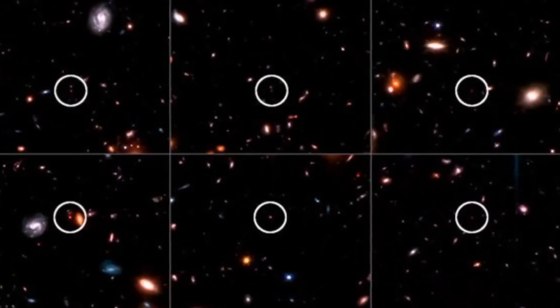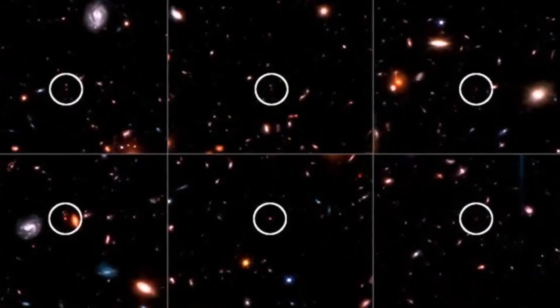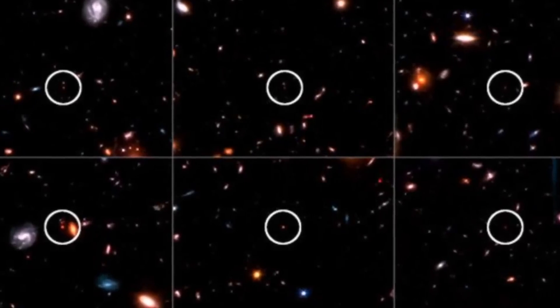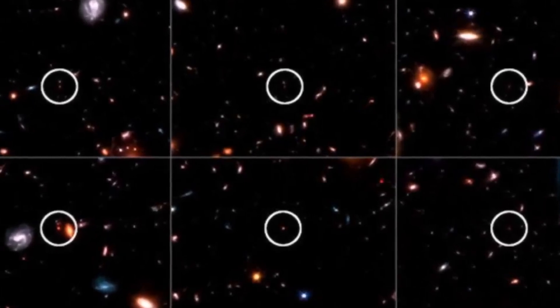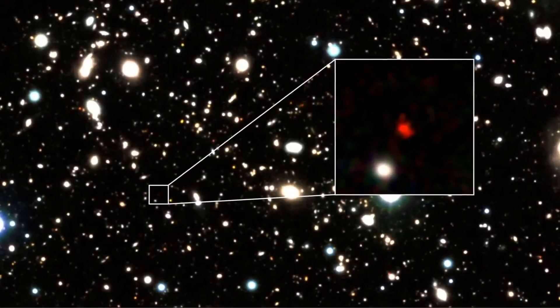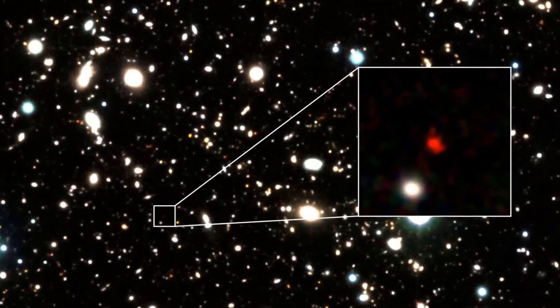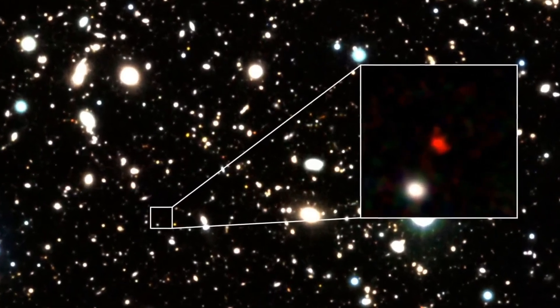A photo revealing ancient galaxies, so old that they shouldn't even exist, has shaken the world of astronomers and cosmologists. In addition to this impact, it has been revealed that at least one of these galaxies hosts an ultra-massive black hole at its center.